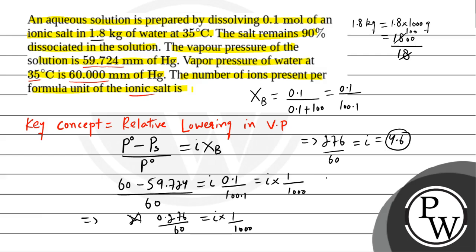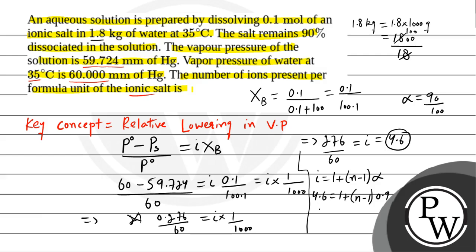Now we use the relation: i = 1 + (n − 1) × α, where i is the van't Hoff factor, n is the number of ions per formula unit, and α is the degree of dissociation. We have i = 4.6, α = 90/100 = 0.9. So 4.6 = 1 + (n − 1) × 0.9. Solving: 3.6 = (n − 1) × 0.9, so n − 1 = 4, therefore n = 5. The number of ions present per formula unit of the ionic salt is 5.